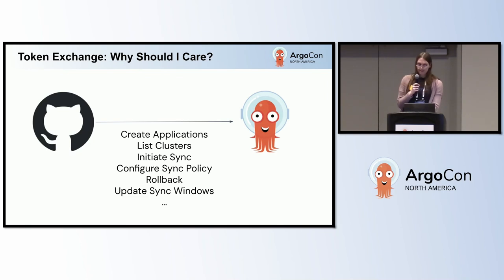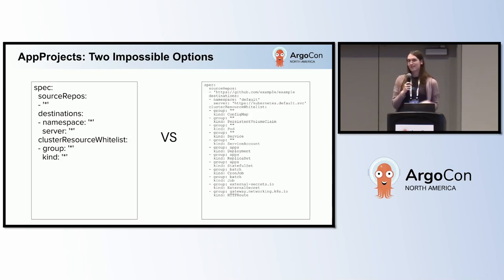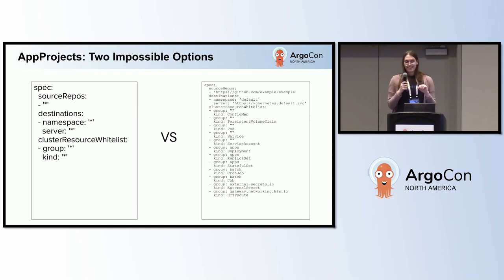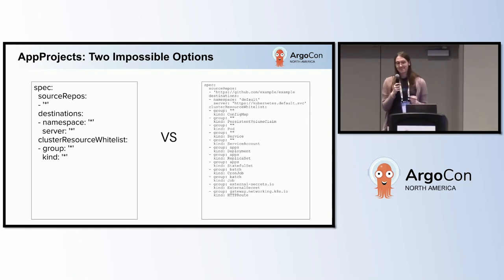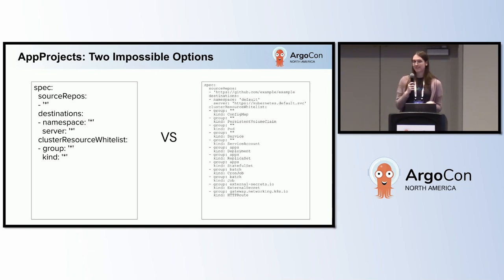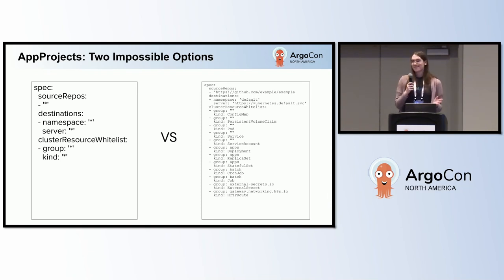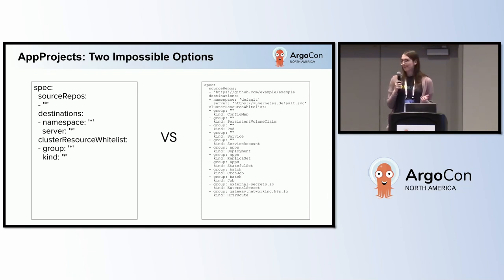Now I'm going to talk about app projects fundamentally. This is just a basic pseudo code version of an app project. There are two ways to define an app project in Argo CD. You have what I'll call the 'anything goes' pattern, where you just make everything a wildcard star. As a platform engineering team, this is great — you don't have to deal with anything, you don't have users bugging you about their permissions being out of sync.